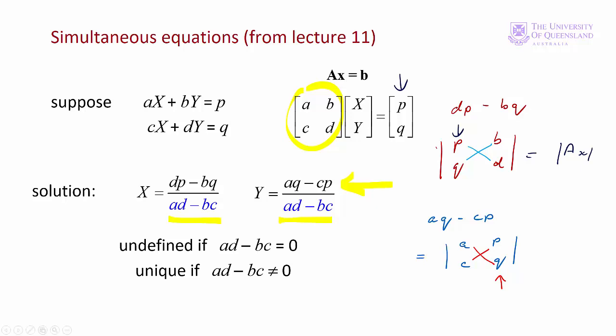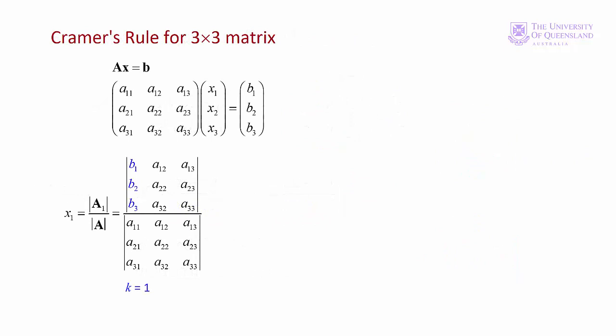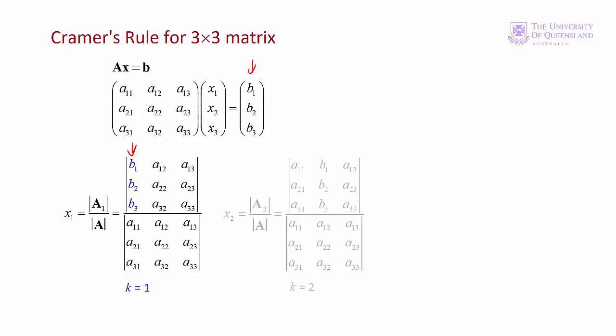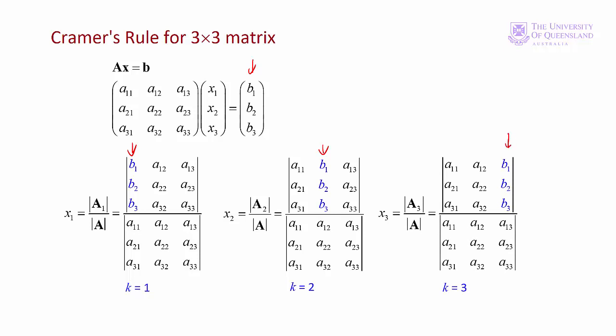We can do the same thing for a system of three equations. To solve for x1, the first variable, we replace the first column in the matrix of coefficients by the vector of constants, giving the ratio of the determinant of A1 over the determinant of A. Similarly for x2, we replace the second column with the vector of constants, and for x3, the third column.